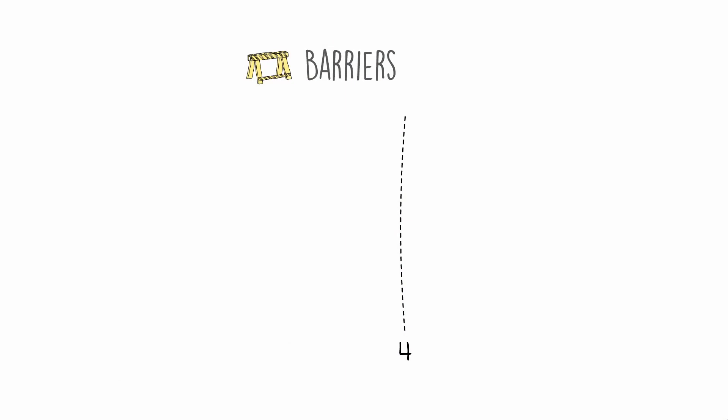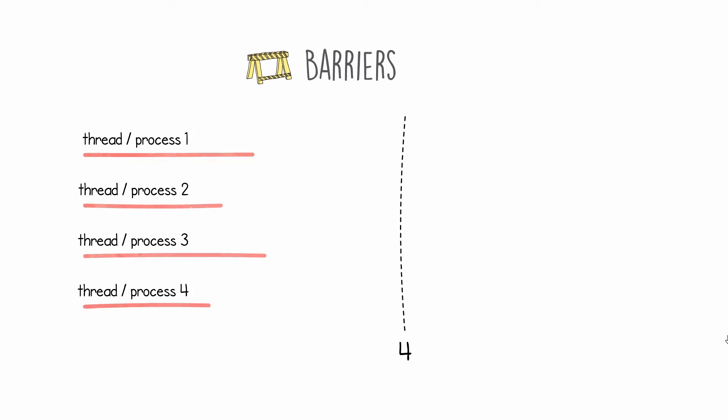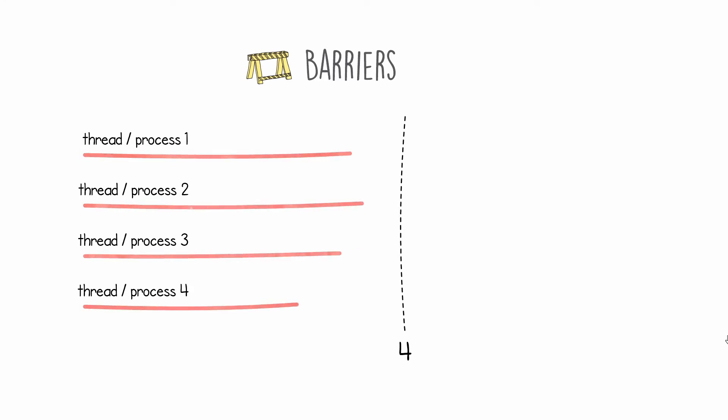Over here we have an example of a barrier that can support four threads. When you initialize one of these barriers you specify how many processes or threads you want to support. In this example we have four. So we have four threads or processes; they are executing their code at their own pace. Eventually one of them will get to the code where it hits one of these barriers. In the code, thread number two in this example will hit the line which says barrier.wait.